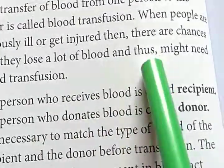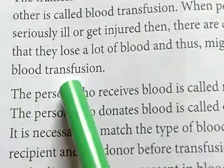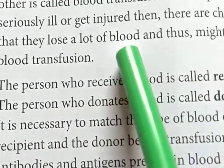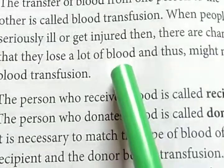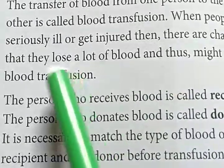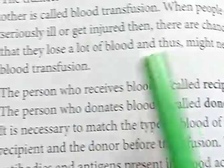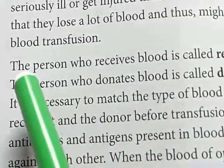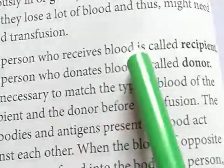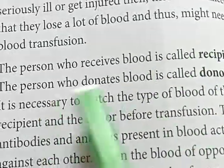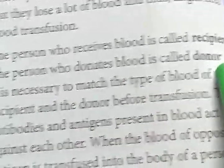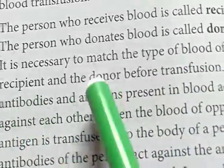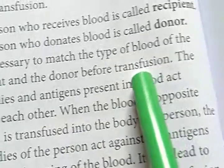When people are seriously ill or get injured, they may lose a lot of blood and thus might need blood transfusion. When we meet with a fatal accident, there will be a loss of blood and blood transfusion is needed. The person who receives blood is called the recipient and the one who donates is known as the donor. It is necessary to match the blood type of the recipient and the donor before transfusion.